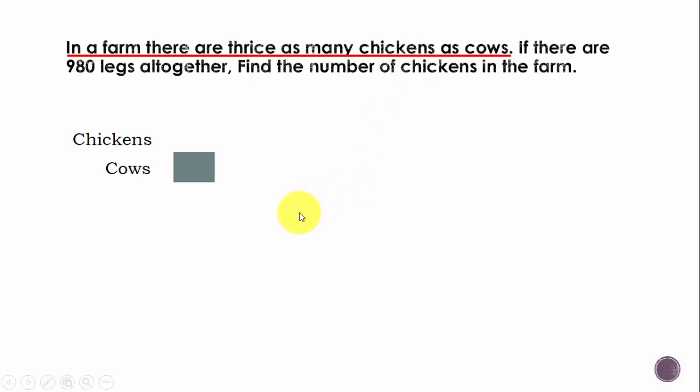So for every cow that you have, you will have three chickens. That is what it means. So let's go ahead and show that pictorially for our better understanding.